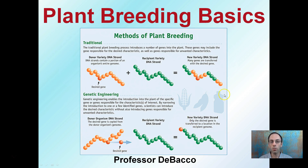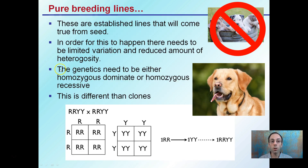We're going to focus a bit more on traditional breeding here. So, pure breeding lines — starting with the basics. These are established lines that come true from seed. In order for this to happen, there needs to be a limited amount of variation and a reduced amount of heterozygosity. The genetics need to be either homozygous dominant or homozygous recessive.